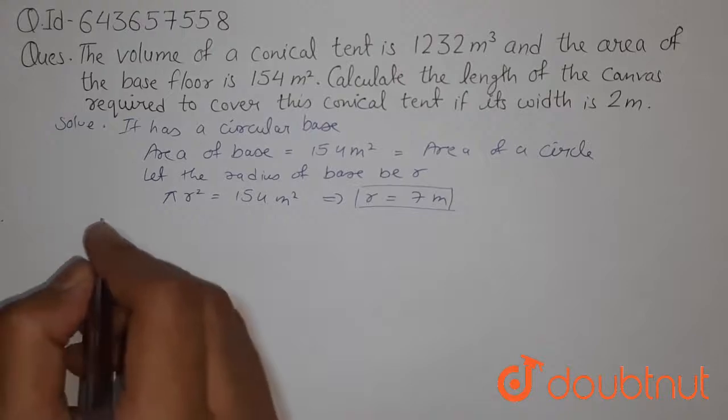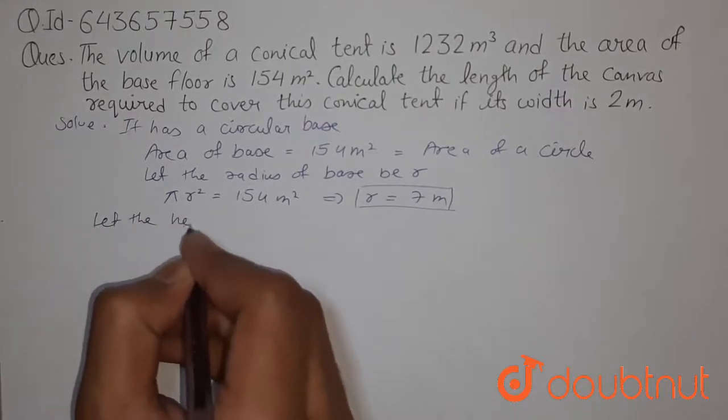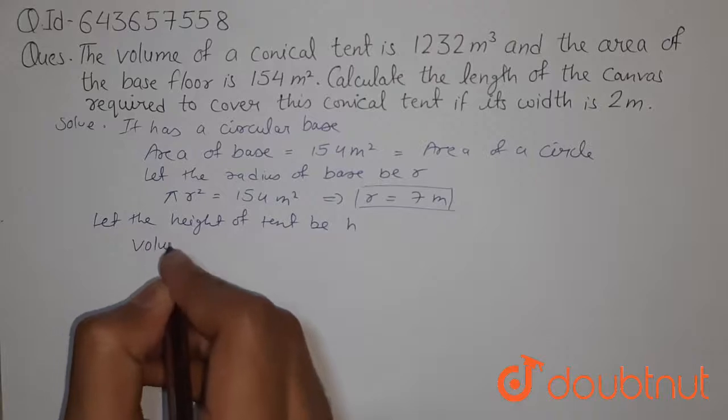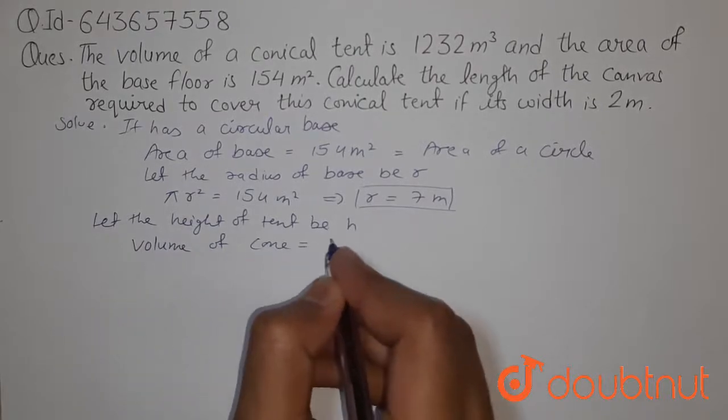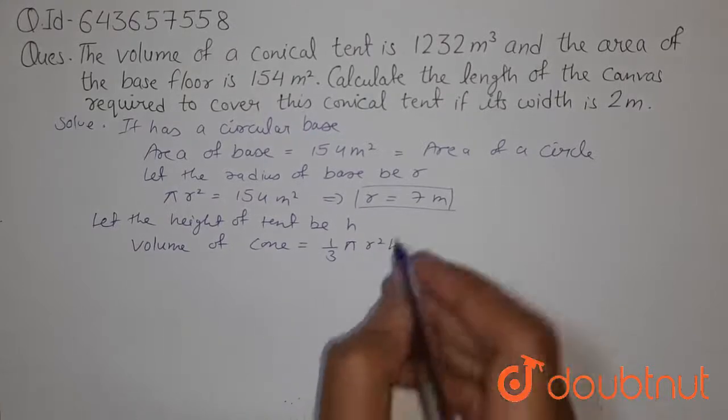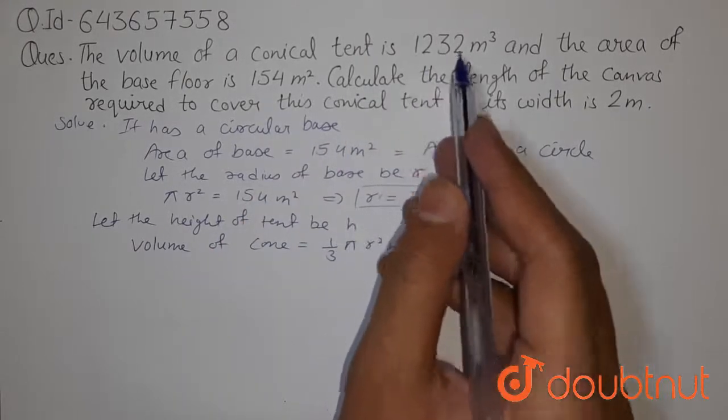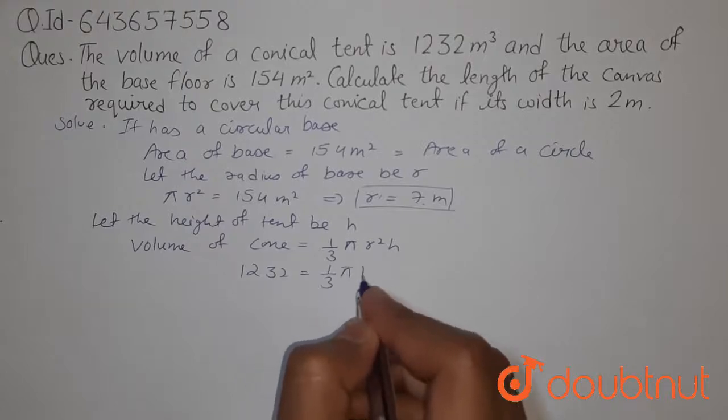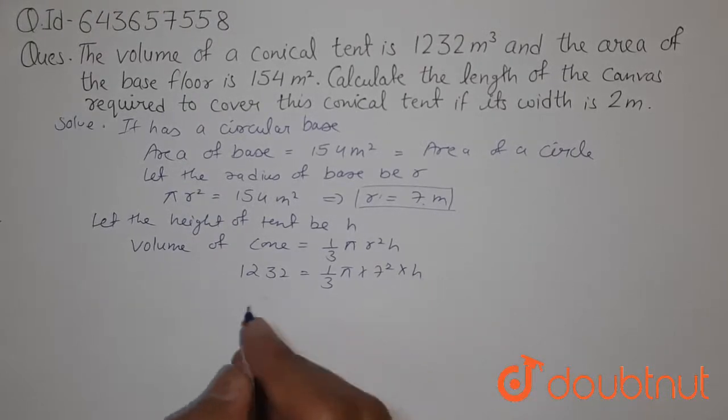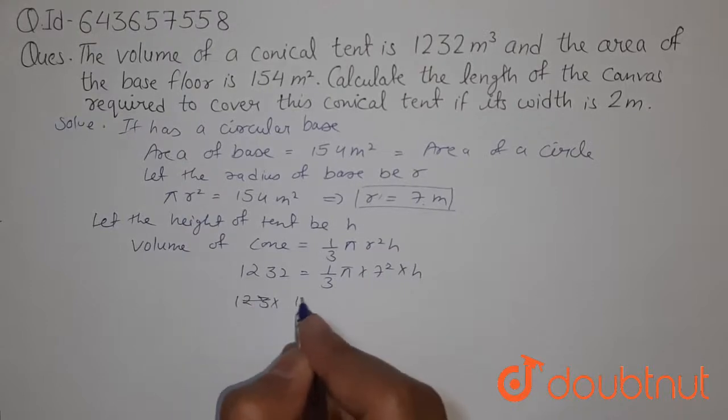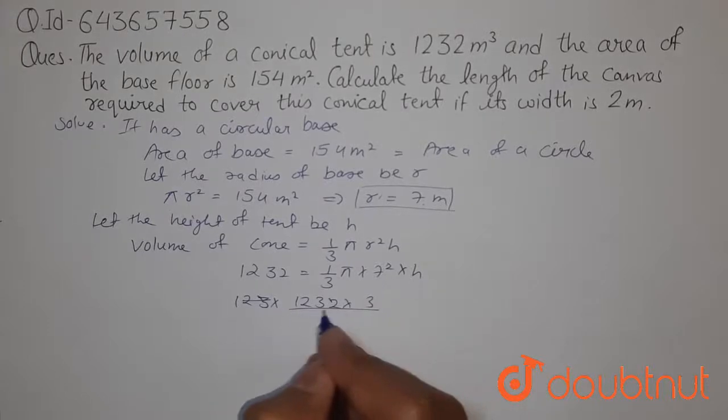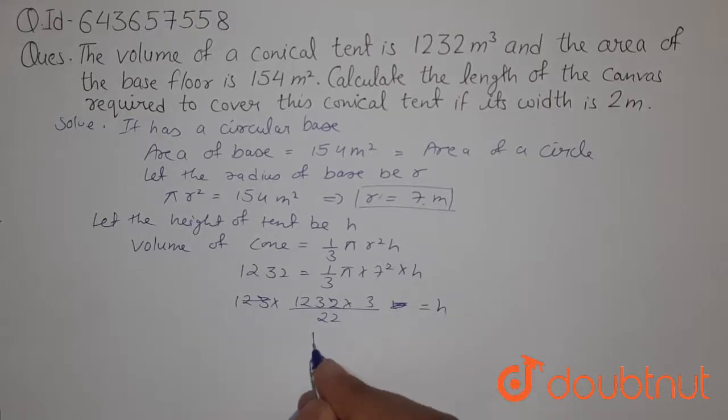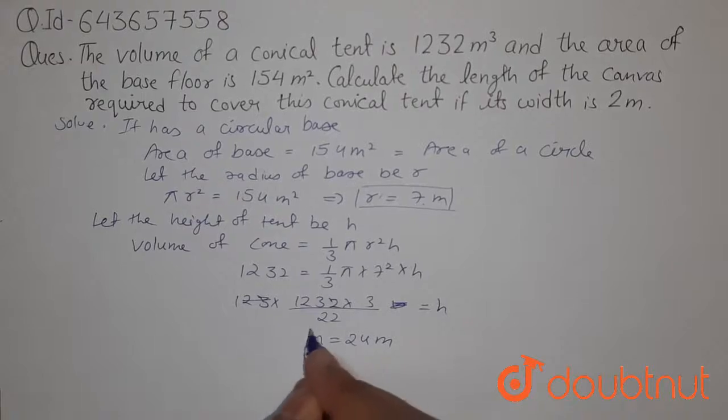Now let the height of tent be H. We know that volume of cone is 1/3 π R² H. Now we have volume 1232 and radius as 7 meter. Putting this we get 1232 equals 1/3 π × 7² × H. From this we get 1232 × 3 ÷ 22 equals H. Solving this we get H equals 24 meter. This is the height of the conical tent.